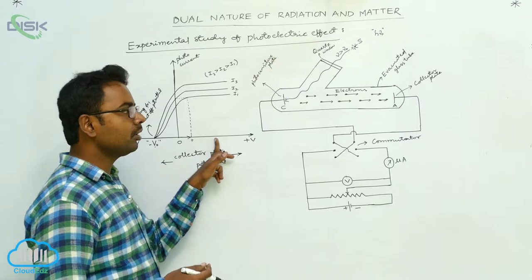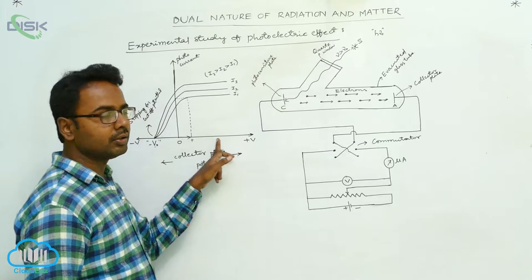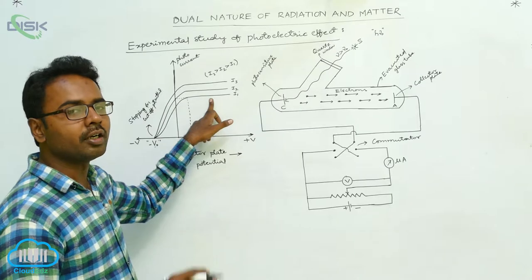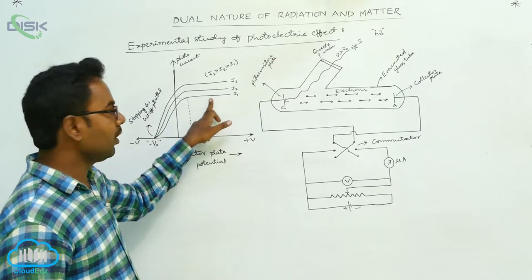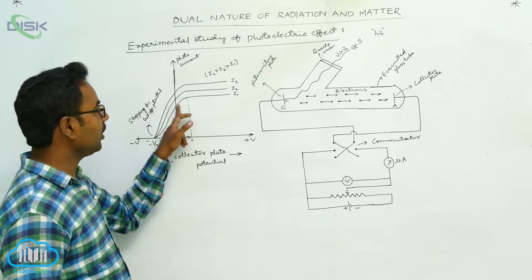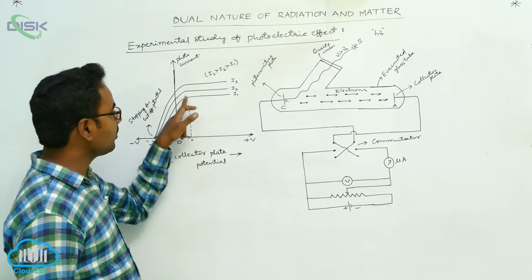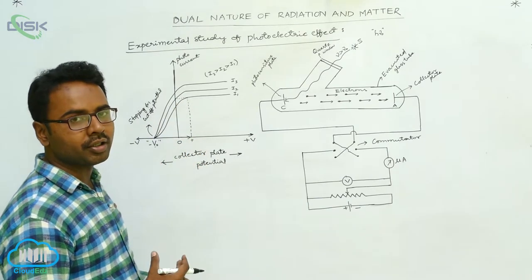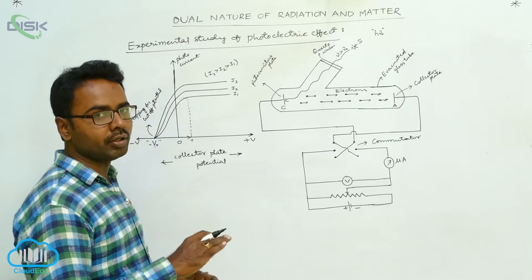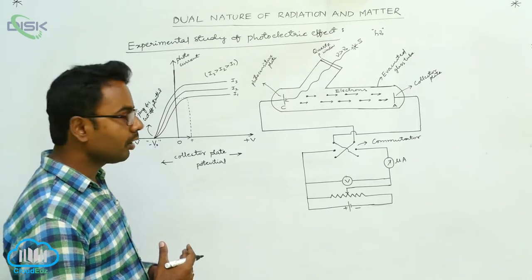Now, if the positive potential of the collector plate is increased further, even though there is no increase in the current flowing in the external circuit — it remains constant. From the graph, it is clear that as we increase the positive potential, first the photocurrent increases and becomes maximum at a particular positive voltage. This maximum current is called saturation current. Even beyond this voltage, if you increase the voltage further, there is no increase in the photocurrent.